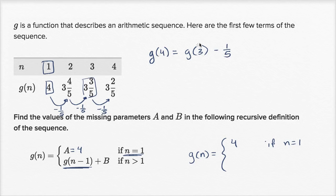I could have written this like g of four is equal to g of four minus one minus one-fifth. So when you look at it this way, you could see that if I'm trying to find the nth term, it's going to be the n minus one-th term plus negative one-fifth. So B is negative one-fifth.